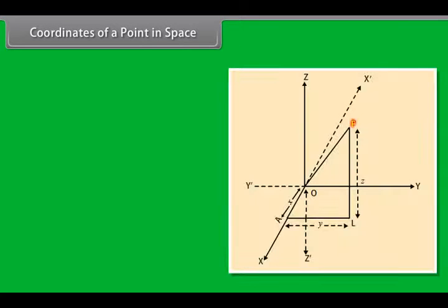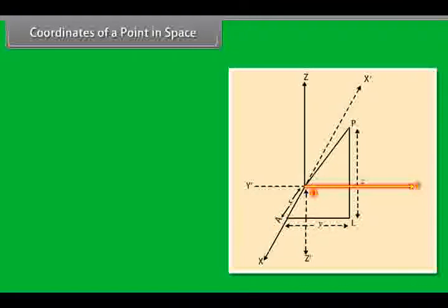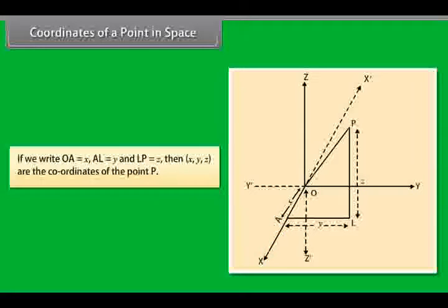Coordinates of a point in space. Let P be any point in space. Through P, draw perpendicular PL on x-y plane meeting this plane at L. Through L, draw a line LA parallel to O-y cutting O-x in A. If we write O-A is equal to x, A-L is equal to y and L-P is equal to z, then x, y, z are the coordinates of the point P.